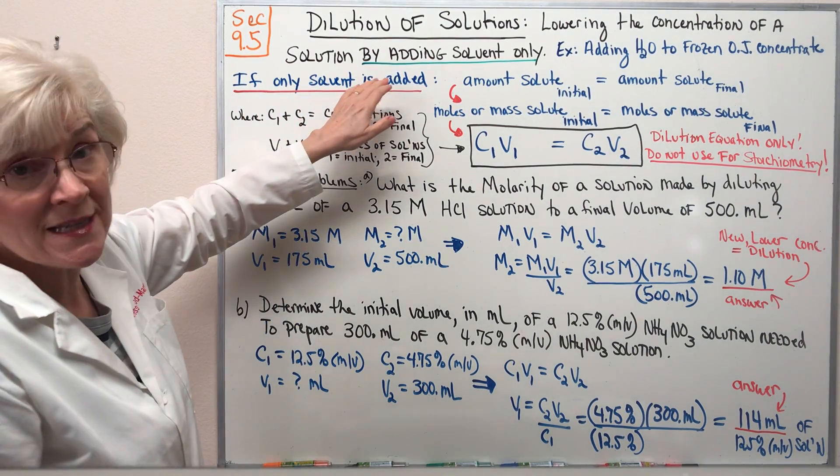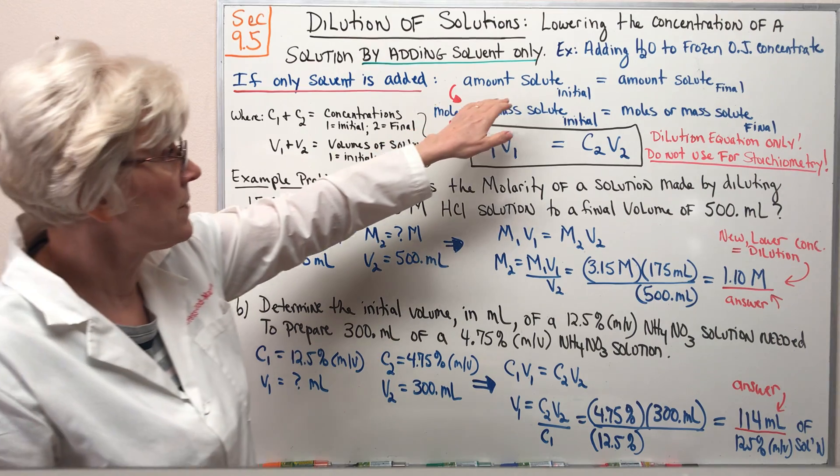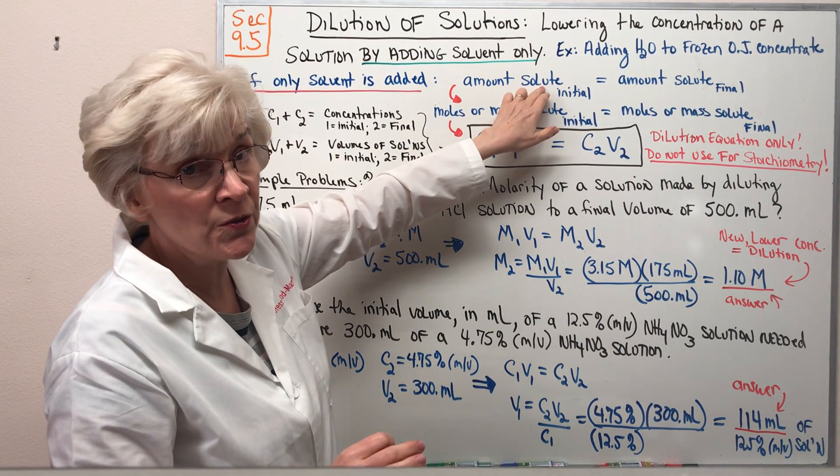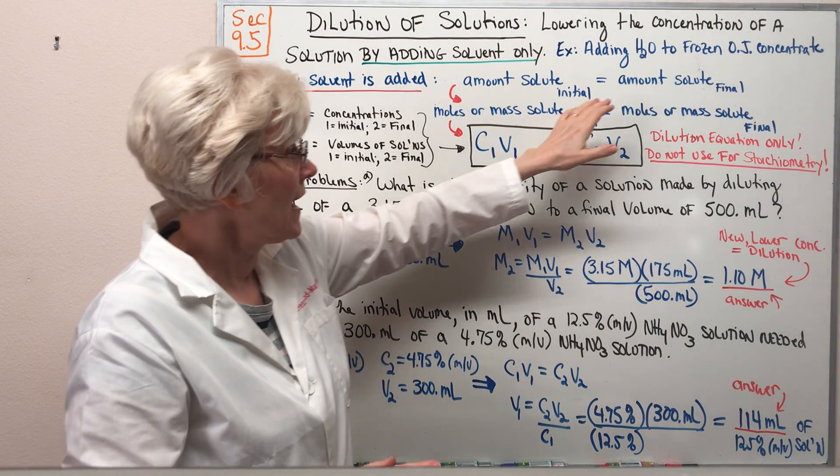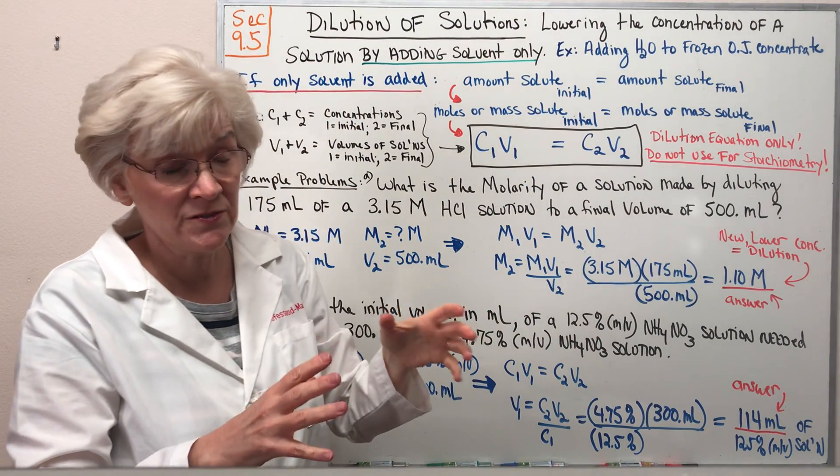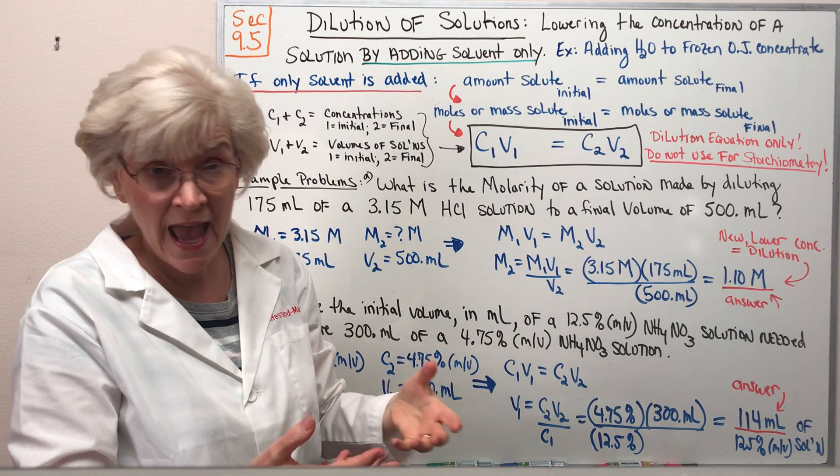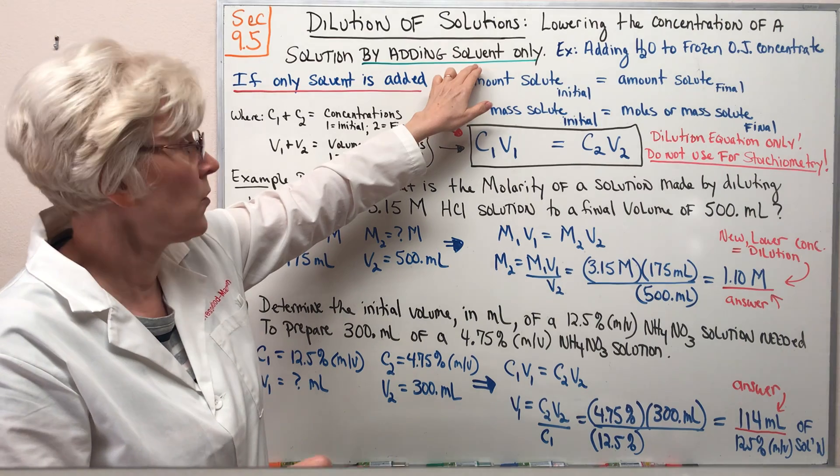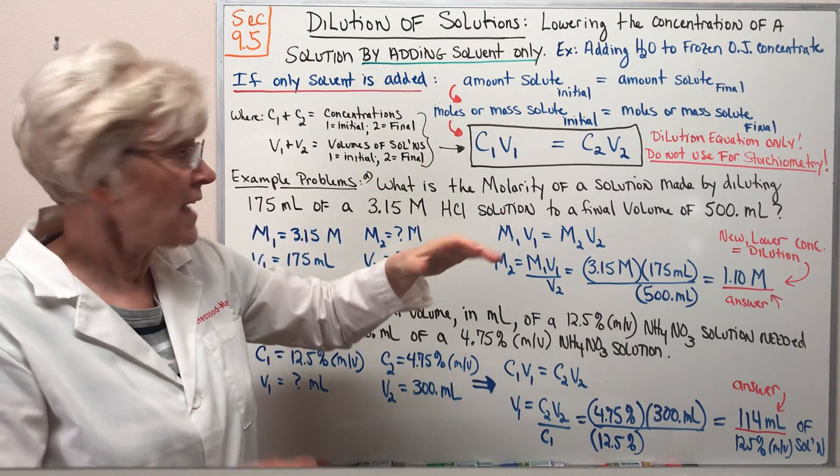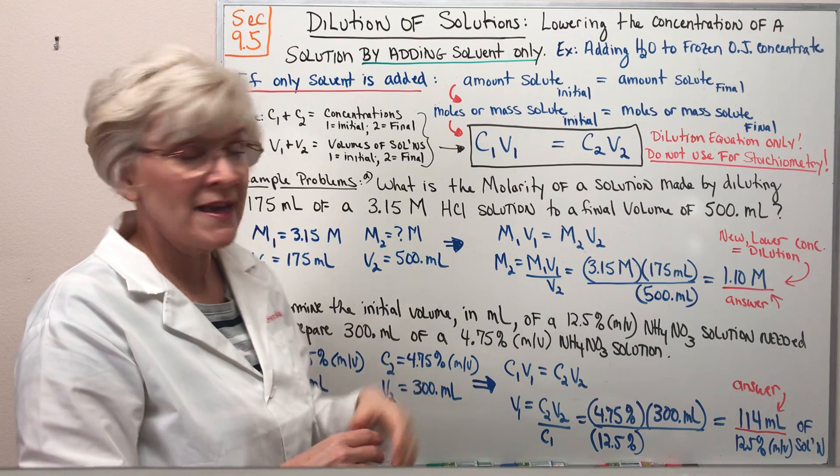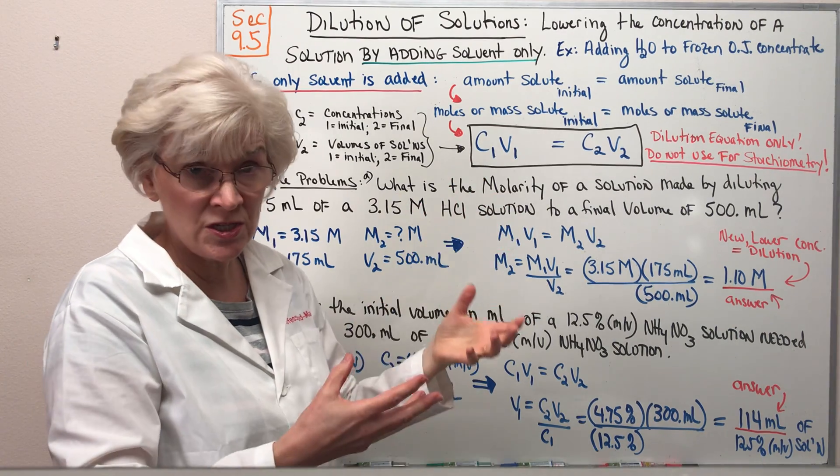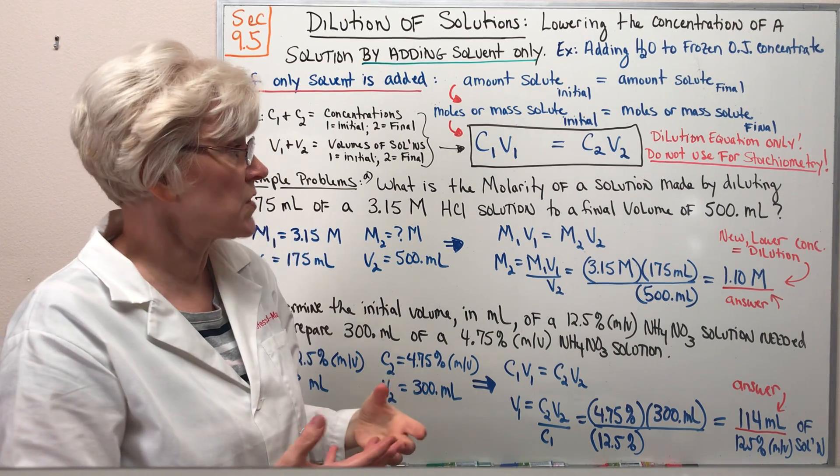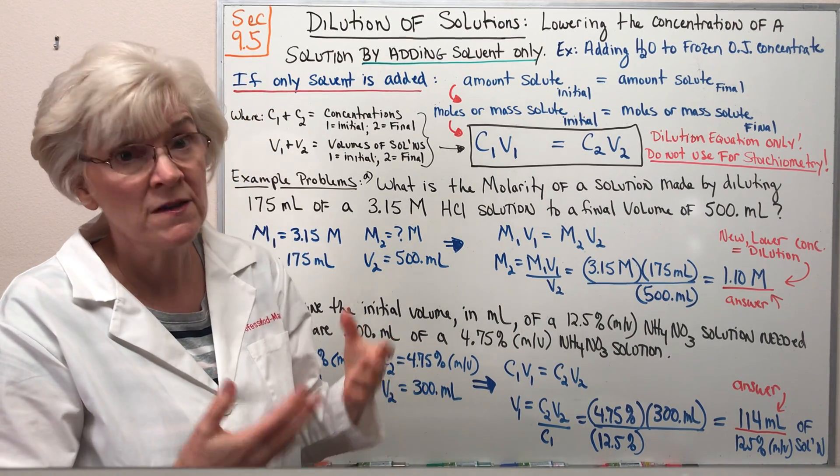If all you are doing is adding solvent, then it must be true that the total amount of solute that you have at the beginning has to equal the total amount of solute you have at the end of the dilution, because all you've done is add solvent only. If that's true, then either the moles or mass of the solute initial has to equal the moles or mass of solute present at the end, final.